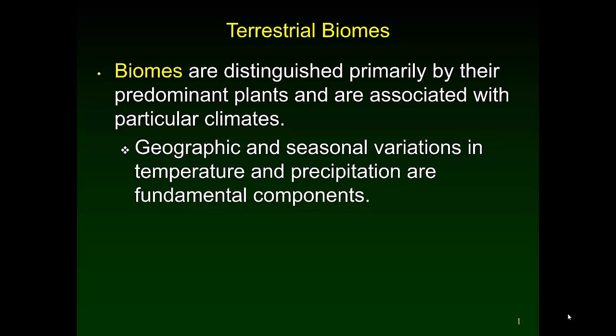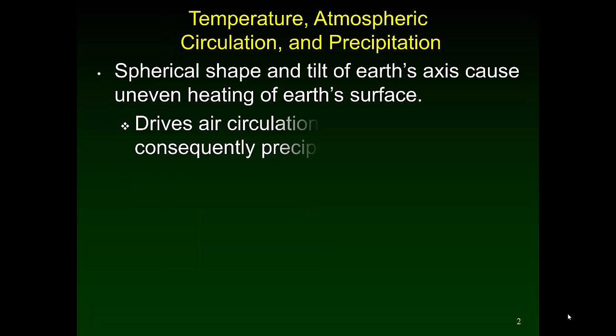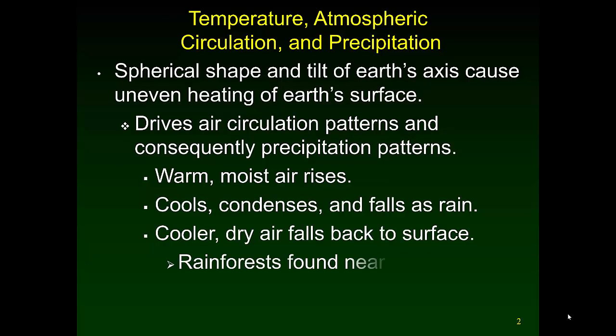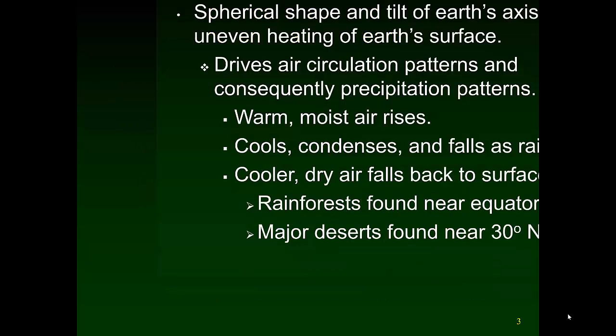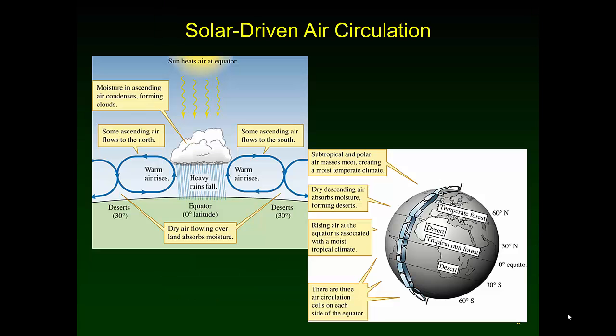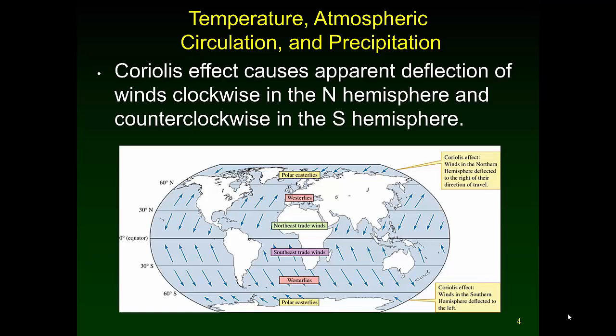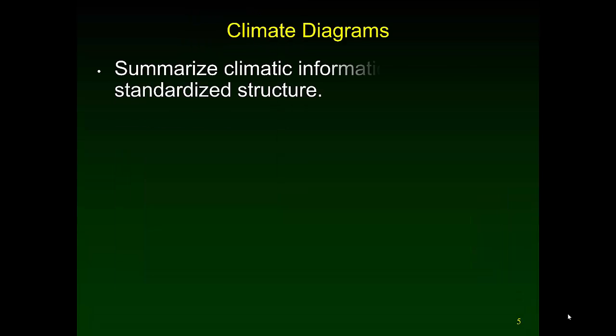This is the second of the lectures on biomes. I'm going to click through the slides we've already gone through. We've talked about what a biome is, how the shape of the earth affects the distribution of rainfall, winds, and temperature, and we talked about the Coriolis effect deflecting the winds.